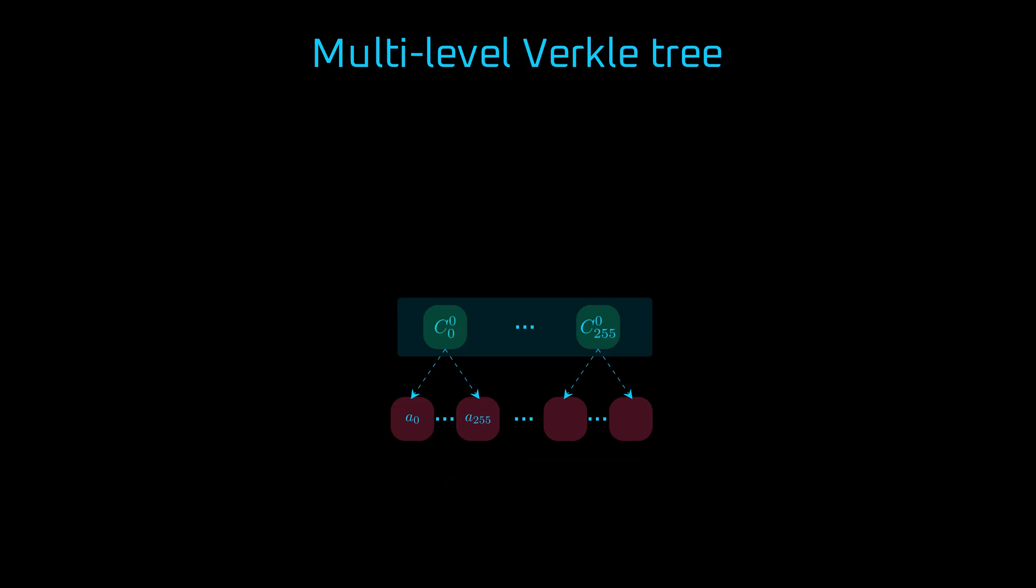What if we wanted to commit to such an array of commitments? Up to this point, we've only committed to values that are scalar field elements. But now we face a new challenge. How do we commit to elliptic curve points? For example, in KZG, a commitment is an elliptic curve point that takes up about 381 bits, while the scalar field only supports 255-bit values.